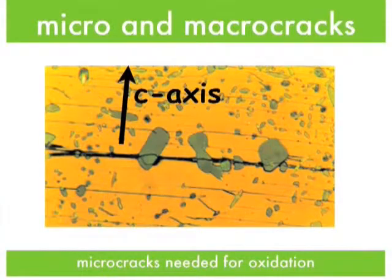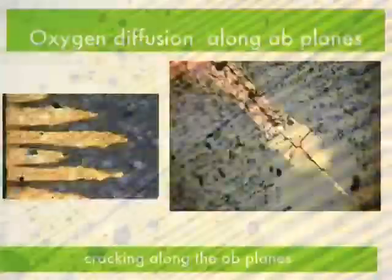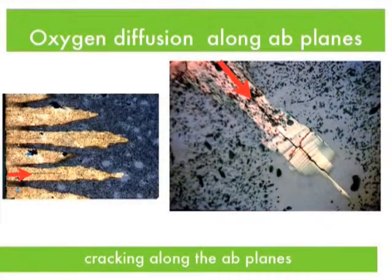During melt processing, microcracks form. They're very good in that they're useful for getting oxygen into the material, but macrocracks are very bad in that they stop current flowing. A lot of people put in rare-earth excesses and form nanoparticles of rare-earth oxides, and that is a good method, but you must control their distribution and make sure that there's no segregation to the grain boundaries.